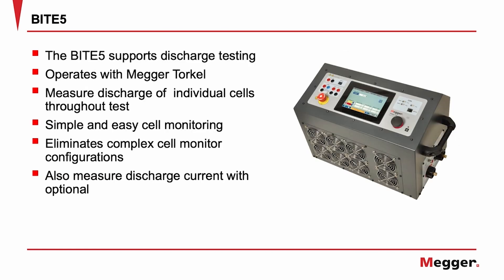The Byte 5 also supports discharge testing and can be used with a Megator cal. It will measure the discharge of individual cells throughout the duration of the discharge test. This allows simple and easy cell monitoring. The Byte 5 will also measure the discharge current if the optional CT is used.